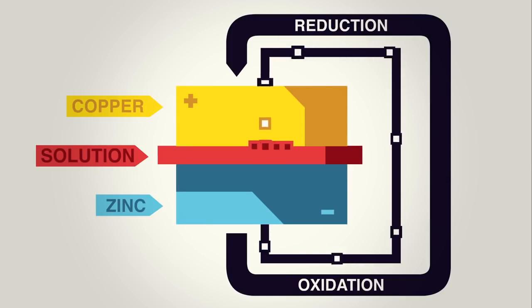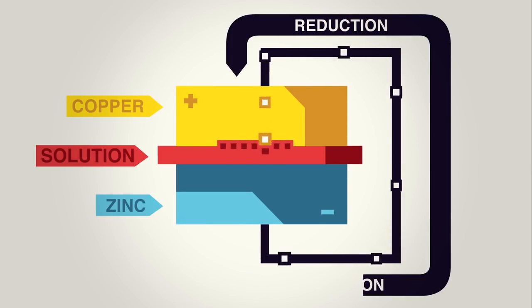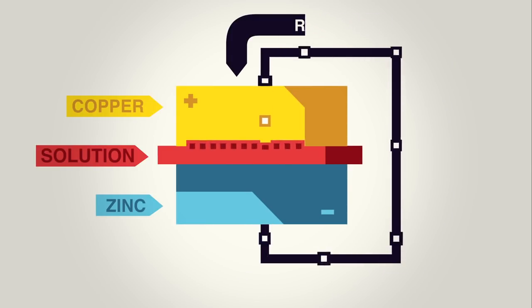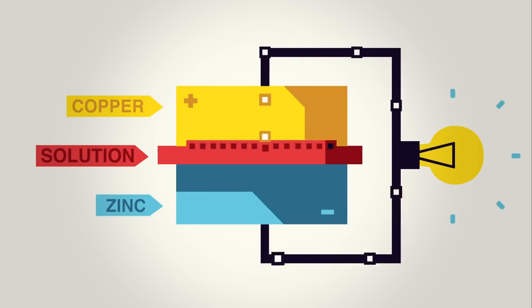This oxidation-reduction cycle creates a flow of electrons between two substances, and if you hook a light bulb or vacuum cleaner up between the two, you'll give it power.